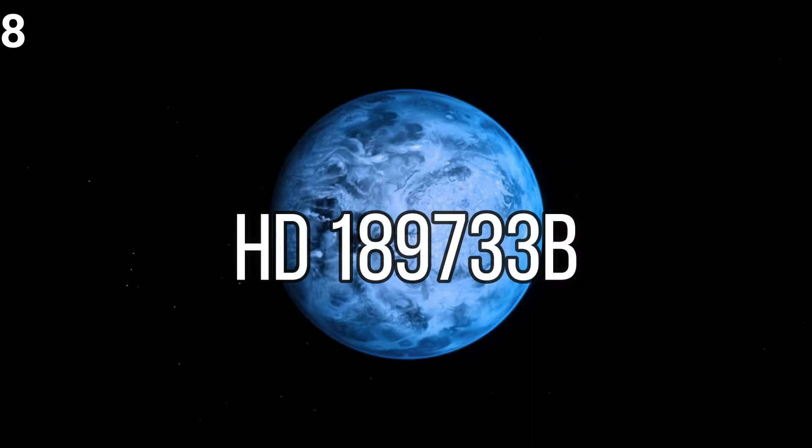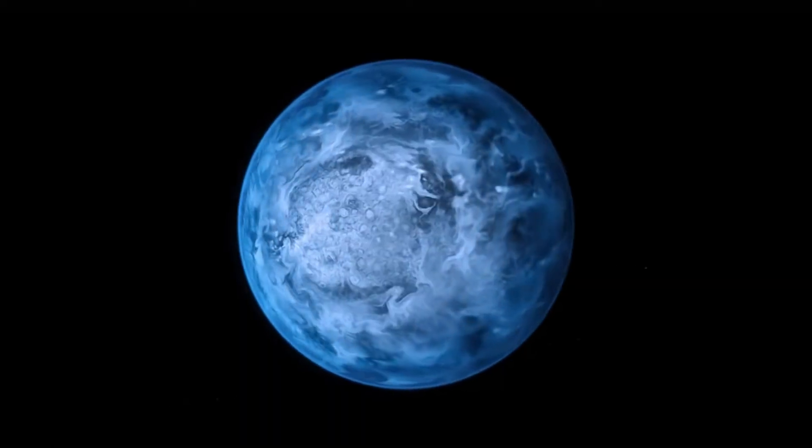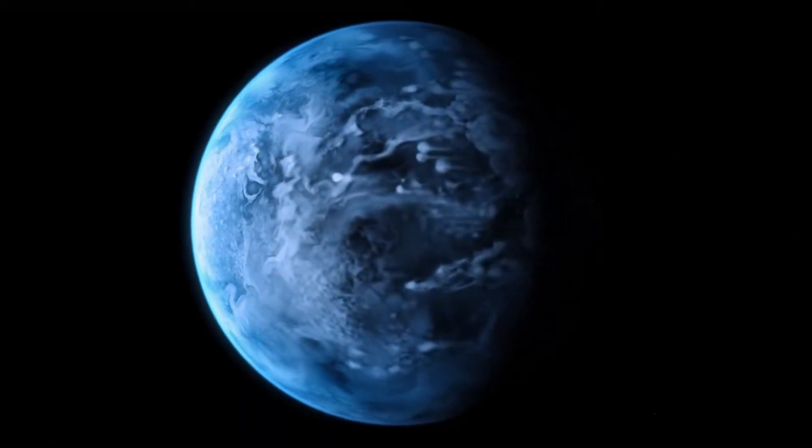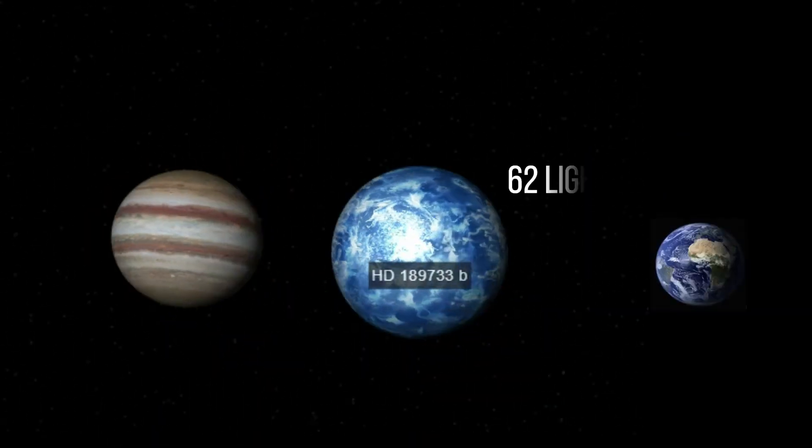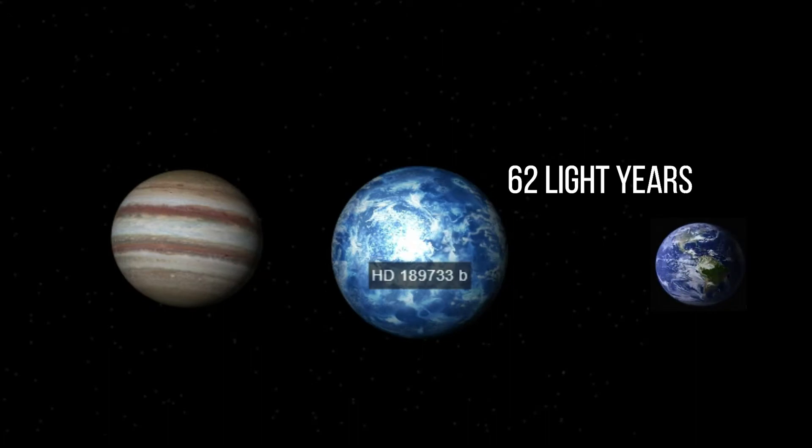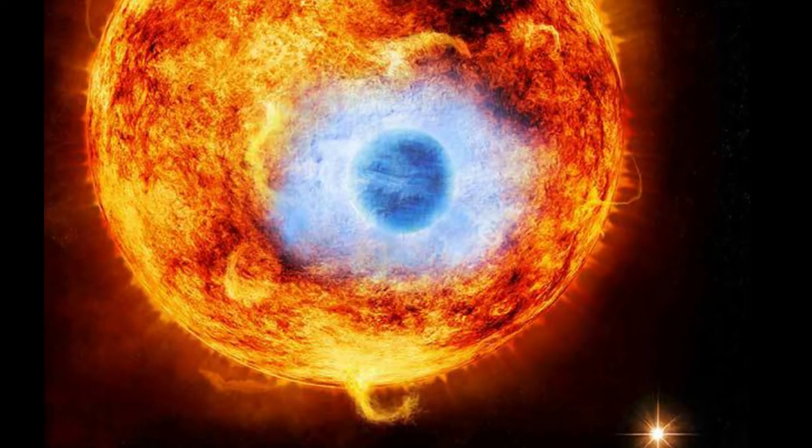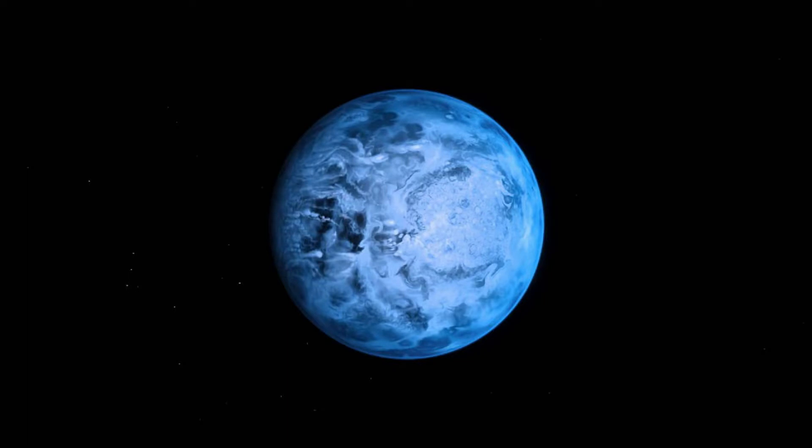Number 8: HD 189733b. This planet was discovered on October 5, 2005 by astronomers in France. HD 189733b is slightly larger than Jupiter and located about 62 light years away from Earth.